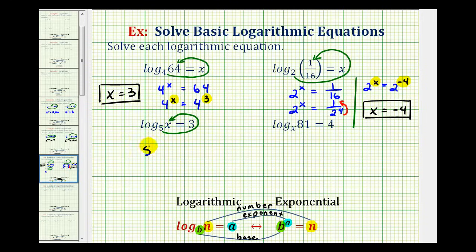So 5 to the third power must equal x. And since 5 to the third is equal to 125, 125 equals x is the same as x equals 125.